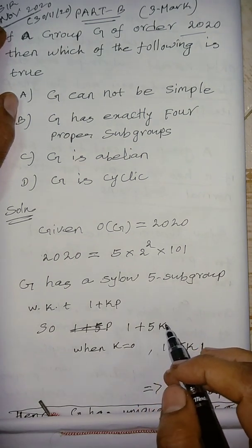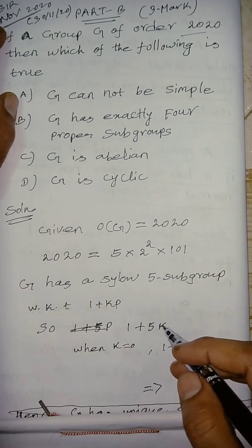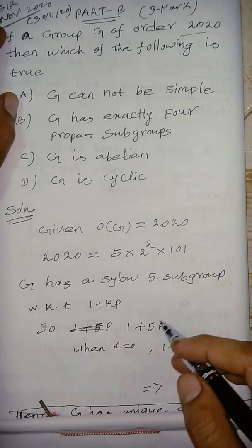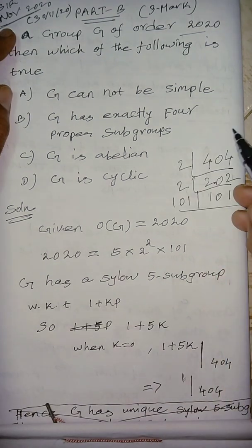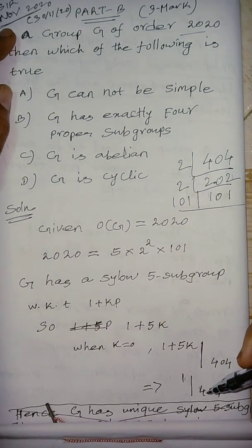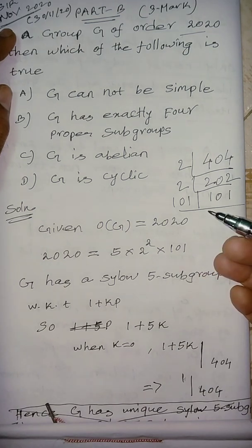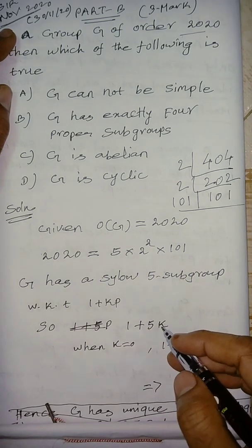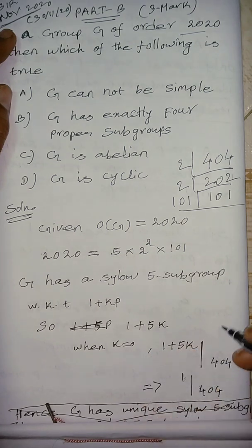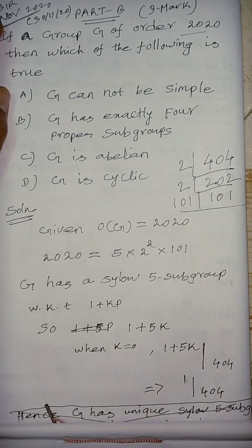Suppose k=1, we are getting 6, but 6 does not divide 404. Like that 2, 5, 10, 11 does not divide. So easily you can find the divisors of 404: 2 divides 404, 4 divides 404, 101 divides 404, and 404 divides 404. So the only possibility is when k=0, only 1 divides 404.